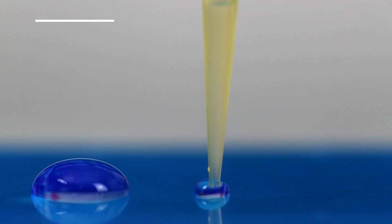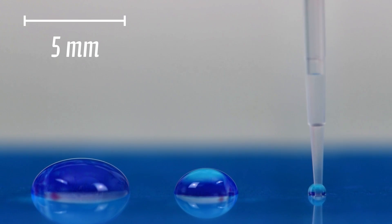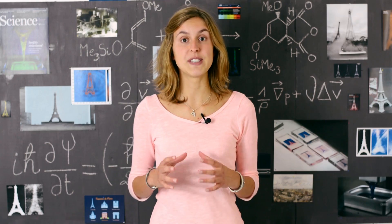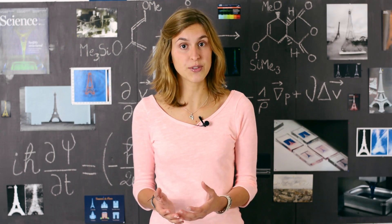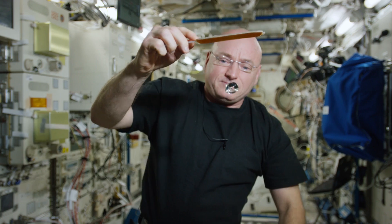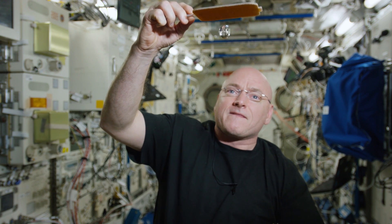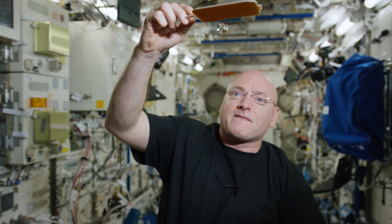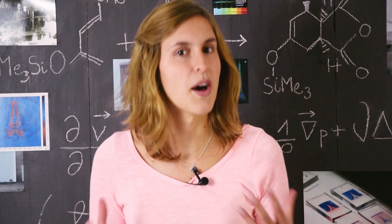That's why big drops are flatter than smaller droplets that are perfectly spherical. If we want to see big round drops, we have to make sure they don't feel their weight anymore. One solution would be to erase gravity by orbiting around Earth, but it's not exactly a common thing to do.